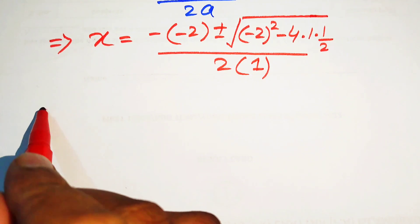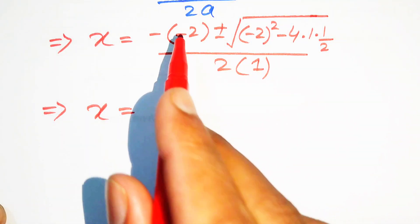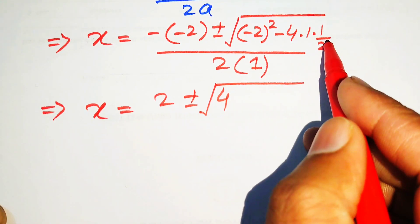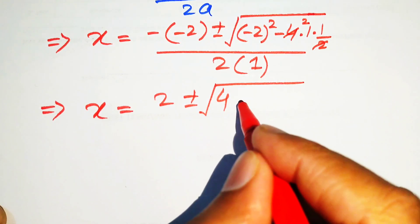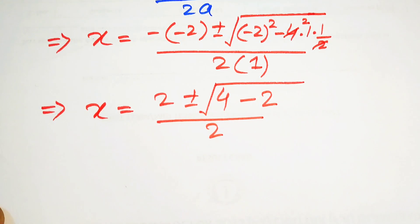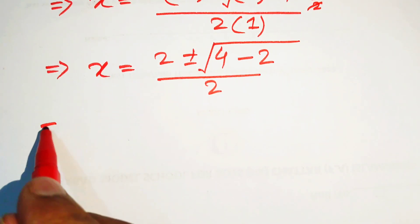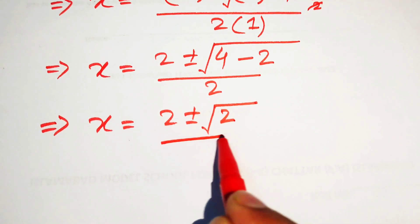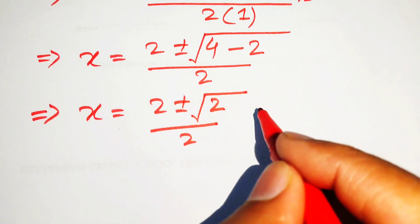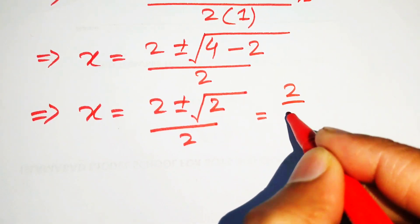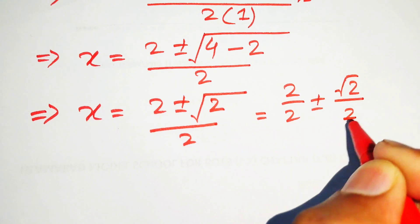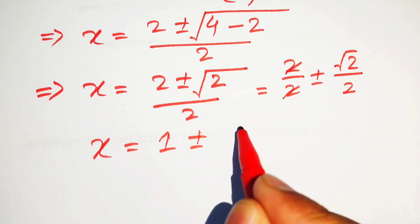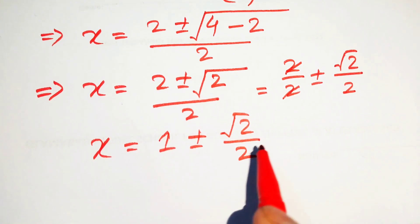Simplifying: minus times minus becomes plus 2, and (minus 2) squared is 4, minus 4 times 1 times (1/2) gives 4 minus 2 equals 2, divided by 2. Breaking the fraction gives 2 over 2 plus or minus square root of 2 divided by 2, so the two values of x are 1 plus or minus square root of 2 divided by 2.